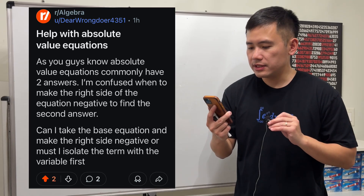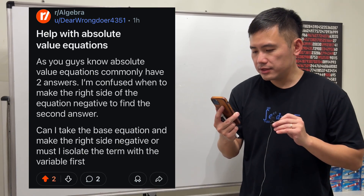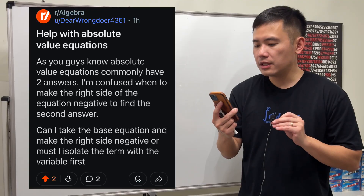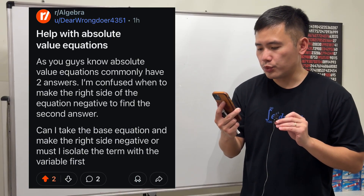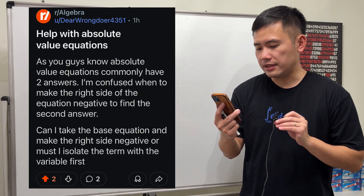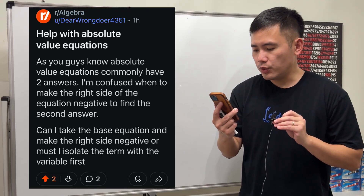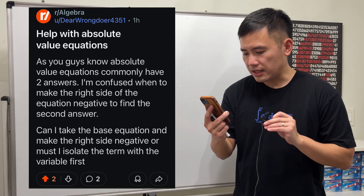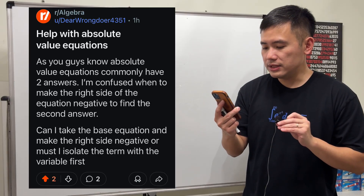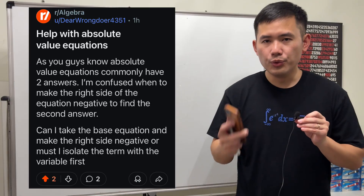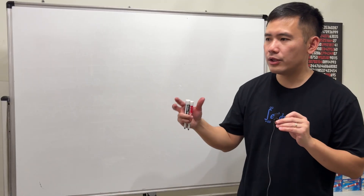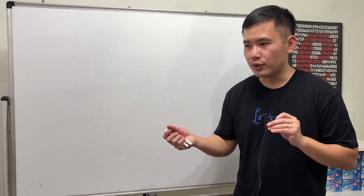Help with absolute value equations. As you know, absolute value equations commonly have two answers. The question is: when do you make the right side of the equation negative to find the second answer? Can you take the base equation and make the right side negative, or must you isolate the term with the variable first? The answer is: you must isolate the absolute value with the variable first.